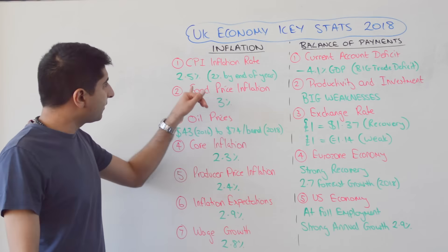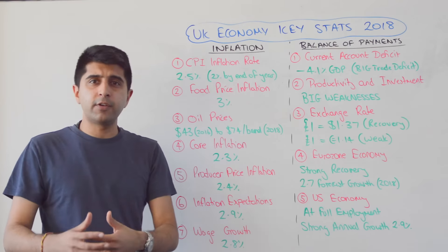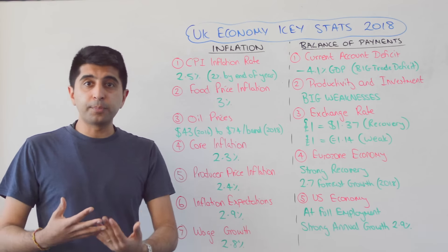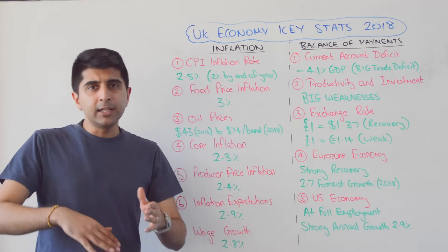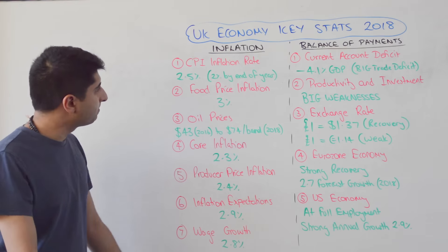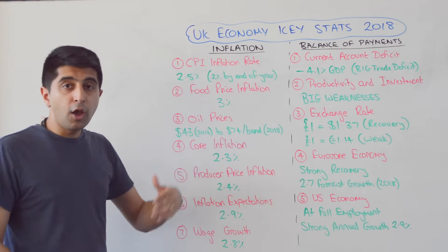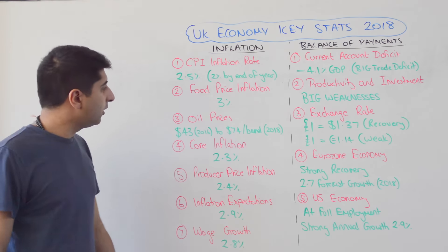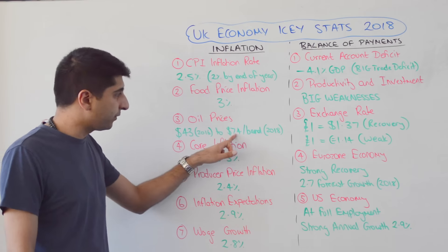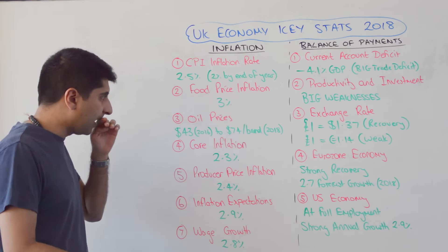Let's now look at inflation and the balance of payments. Inflation in the UK economy is currently 2.5%, and it's forecast to be 2% by the end of the year, so disinflationary pressure is expected. All the higher prices caused by the weak pound are now coming out of the CPI basket, and the pound is slightly appreciating against the dollar, helping to bring down inflationary pressure. Food price inflation stands at 3%. Oil prices are higher — they were $43 a barrel in 2016 and are now $74 a barrel — keeping inflation above target.